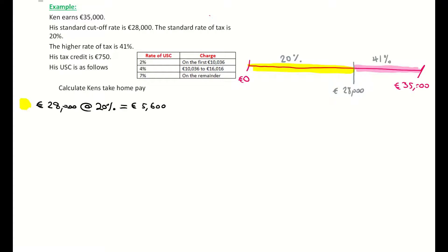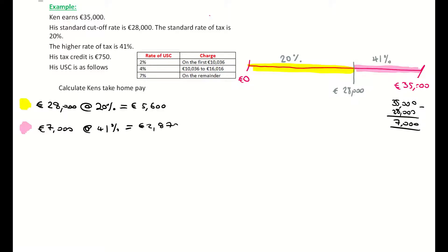Next I come to the higher rate of tax — highlighted in purple — which is the remaining amount Ken earns. I'm paying 7,000 euro at 41 percent tax. That 7,000 comes from 35,000 minus 28,000. 41 percent of 7,000 euro is 2,870 euro — divide by 100 and multiply by 41.